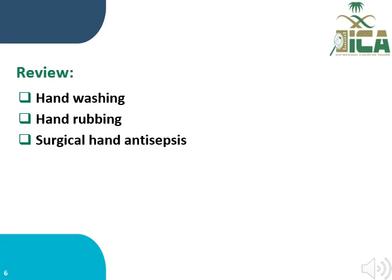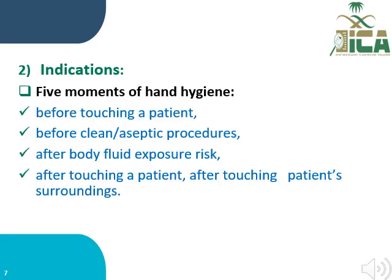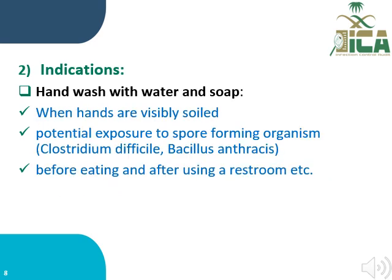You should review hand washing, hand rubbing, and surgical hand antisepsis. Number two, the indication — it should be mentioned in the policy. Review the indications including the five moments of hand hygiene: before touching a patient, before a clean or aseptic procedure, after body fluid exposure risk, and after touching a patient or patient surroundings. The policy should also specify when to use hand washing with water and soap, such as when hands are visibly soiled, potential exposure to spore-forming organisms like C. diff, before eating, and after using the restroom.